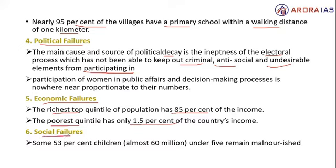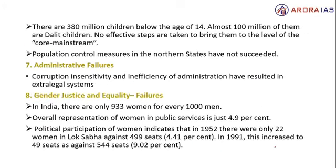Social failure में: some 53% children under 5 remain malnourished। There are 380 million children below the age of 14, and almost 100 million of them are Dalit children। No effective steps are taken to bring them to the level of core mainstream। Population control measures लिये जा रहे थे northern states में, वो भी succeed नहीं हो पा रहे थे।